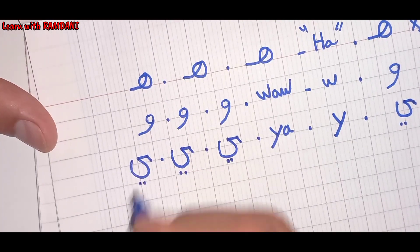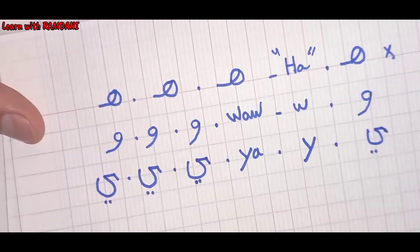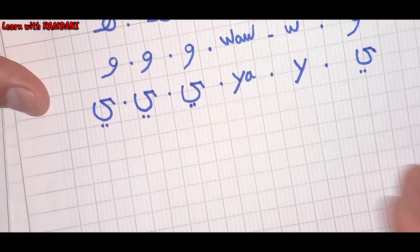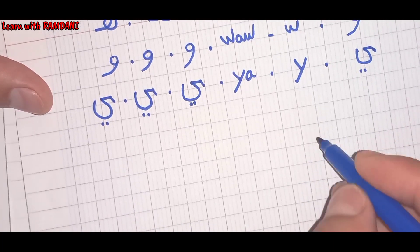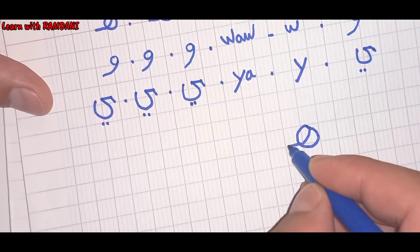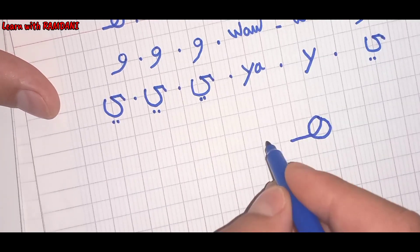Very good. Let's try to write each letter. Ha, as we said, we make a circle like this. Ha, one more time.